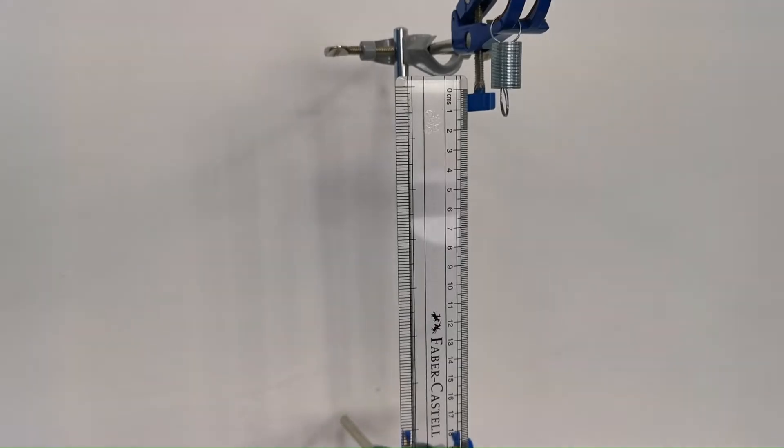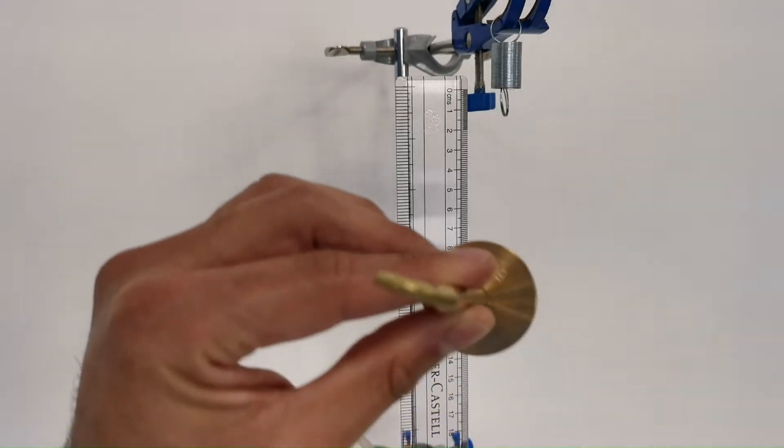Make sure your ruler is fixed vertically and that the zero centimeter mark is at the bottom of the spring when it's hanging without any additional masses.